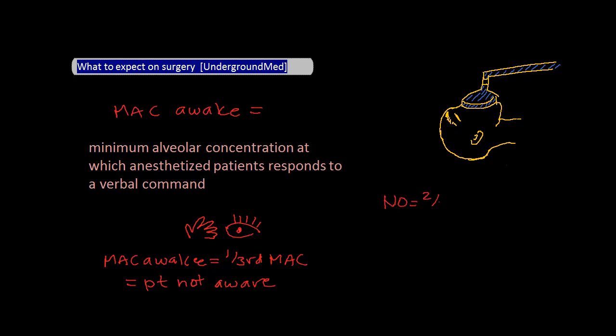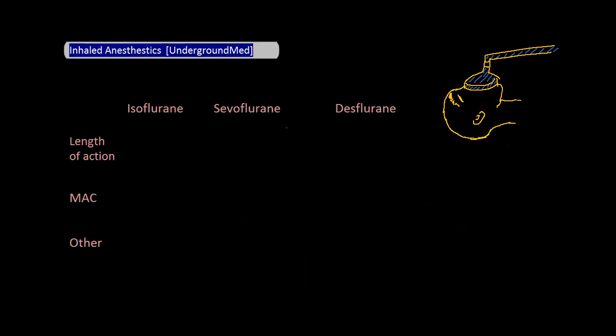Let's finally compare the three main gases. On this table, I've listed some of the highlights which you should know about when comparing the three volatile anesthetics. Generally, these gases cause myocardial depression, as well as decreased blood pressure.